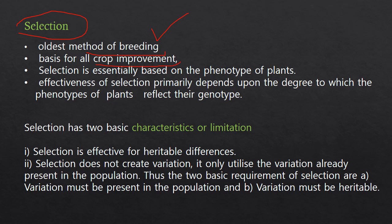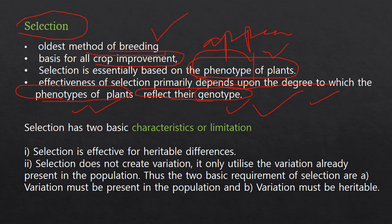Selection is one of the oldest methods of breeding. It was the basis of all crop improvement and is essentially based on the phenotype of the plants. Farmers used to select plants based upon their appearance, which botanically is called phenotype. The effectiveness of selection primarily depends upon the degree to which the phenotype of the plants reflects their genotype, because ultimately everything resides upon the genotype.